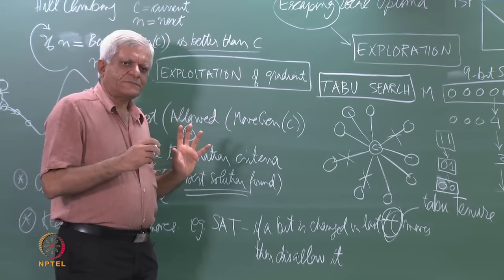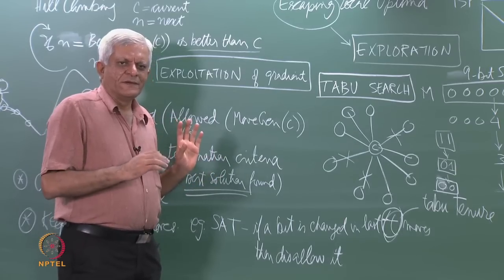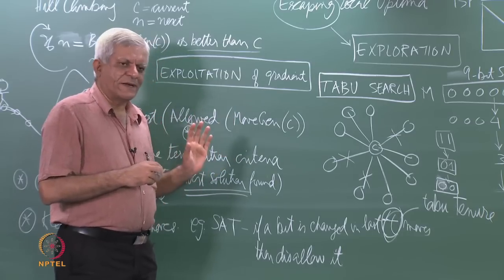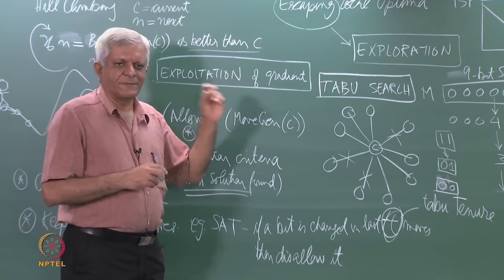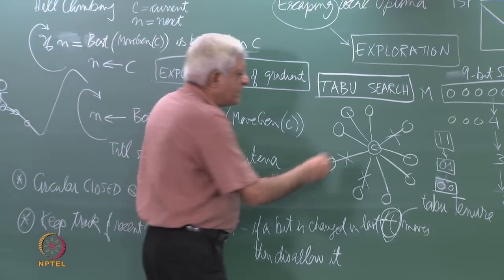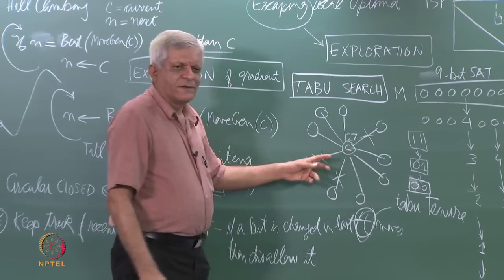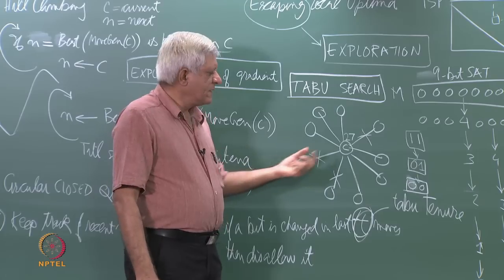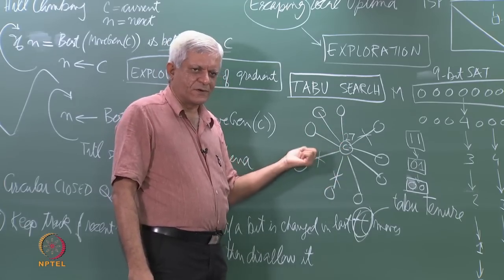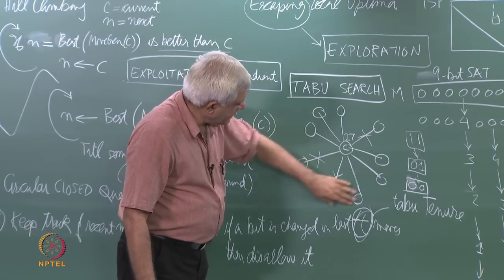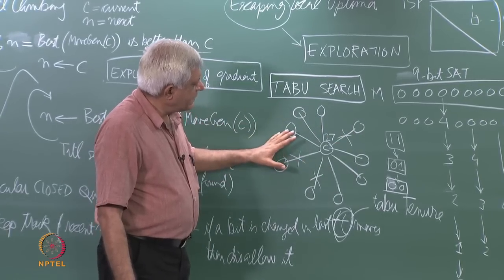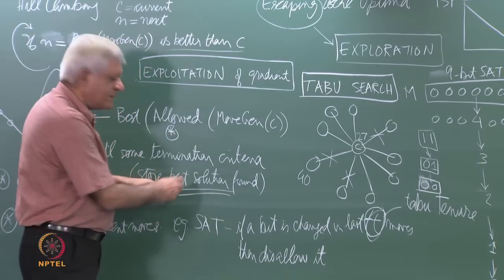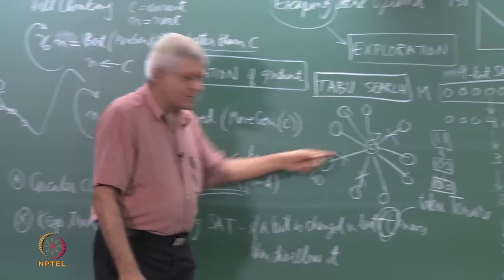Actually, the more detailed taboo search algorithm allows you to make an exception to this barring of certain moves. The exception can be made under what is called the aspiration criteria. The exception says that if all allowed neighbors are bad, and there is a taboo neighbor N which is better than the current best solution seen so far, then allow that move. So for example if my current node satisfies 27 clauses and all allowed neighbors are less than 27, but one taboo neighbor satisfies 40 while the best I have seen is only 35, then I will allow this move — that is the aspiration criteria.